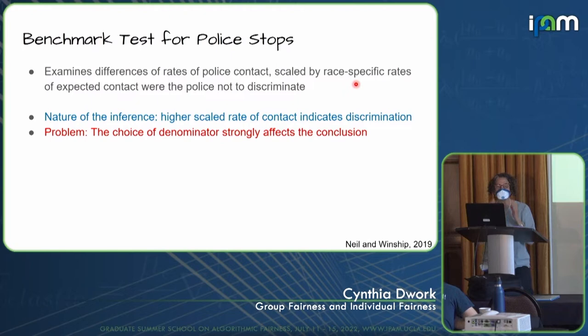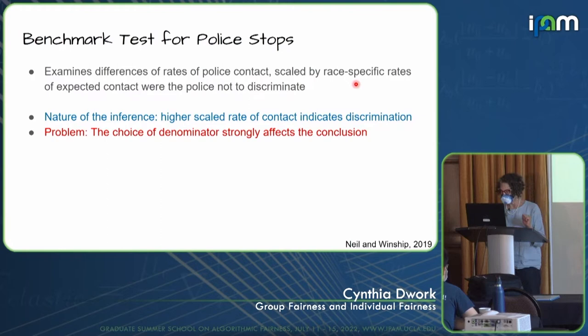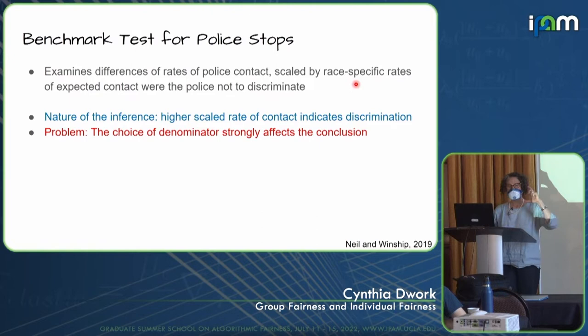The nature of the inference people want to draw from these things is that if you have a higher scaled rate of contact, that will indicate some kind of discrimination. The problem that they show in this article is how the choice of the denominator strongly affects the conclusion. I want to raise a caveat and put up a paragraph of text. I want you to read the paragraph, and then I'm going to draw your attention to two sentences in it.